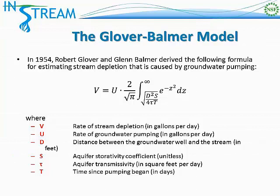These variables go into a function that also includes the coefficient 2 over the square root of pi. The formula then includes an integral of the function e to the negative z squared, where z is the coefficient of integration. The lower limit of integration is the square root of distance squared times storativity over 4 times transmissivity times time, and the upper limit of integration is infinity.